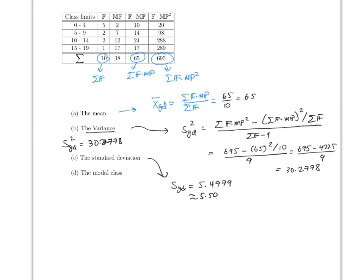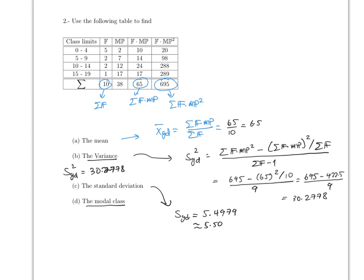Finally, the modal class. This one looks complicated but it's the easiest — just look at the frequency table. There are four classes; the one with the biggest frequency is 5. So the modal class is the class from 0 to 4.